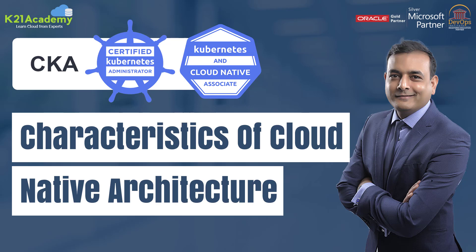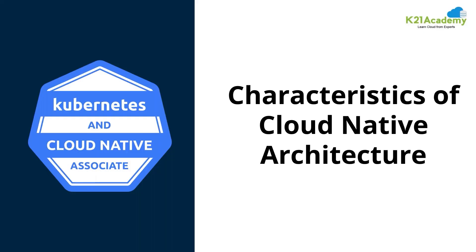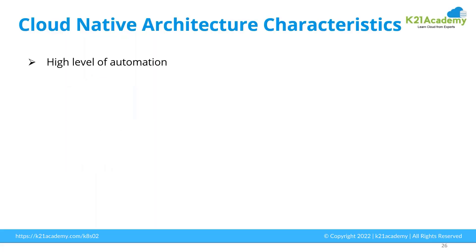A bit about the characteristics of cloud native architecture. Cloud native architecture has high-level automation, and there are a lot of automation tools, DevOps tools, and CI/CD tools which can automate your cloud native architecture.